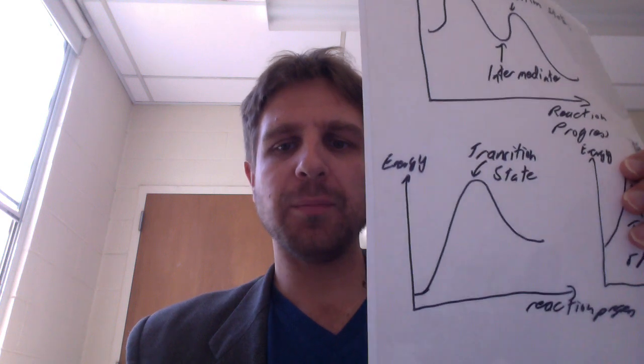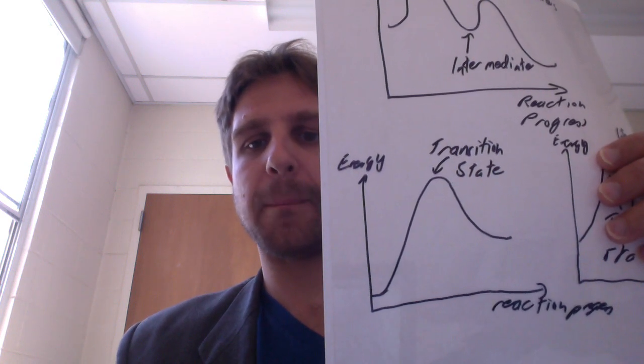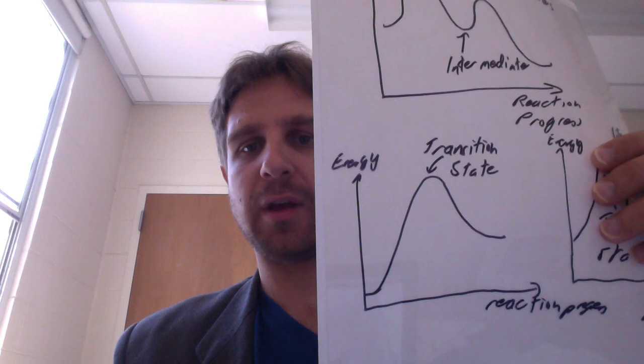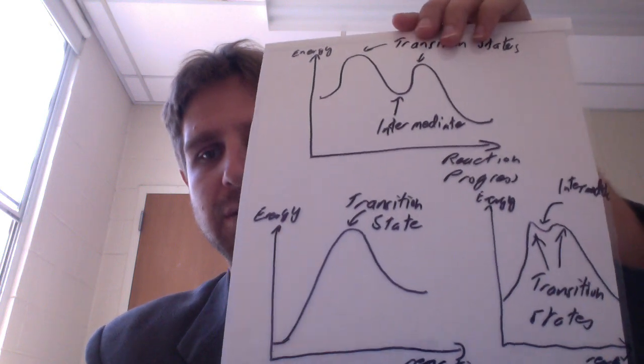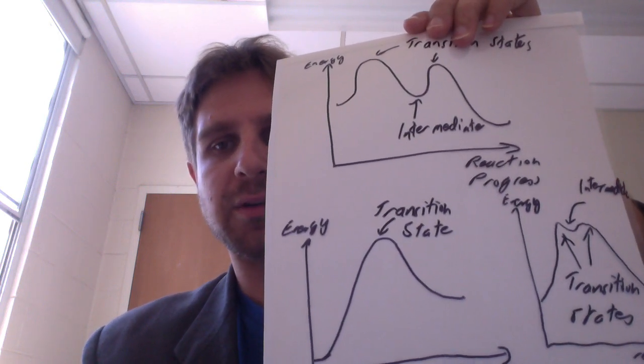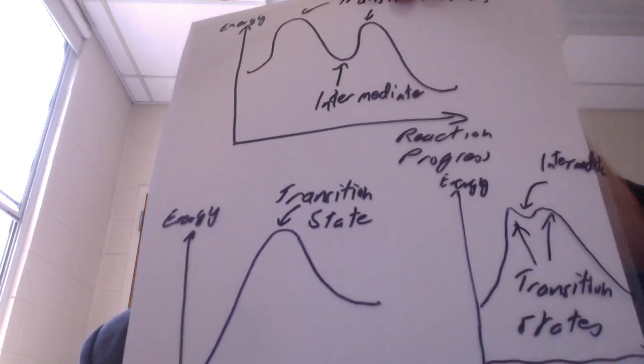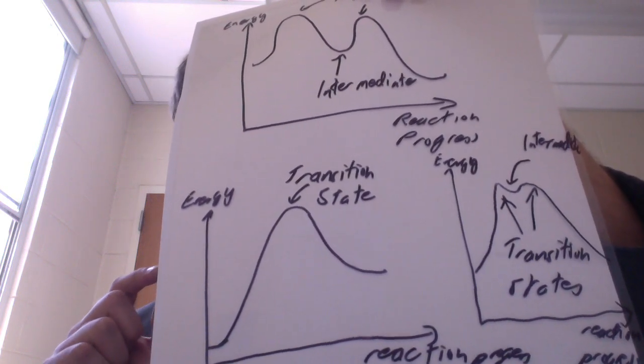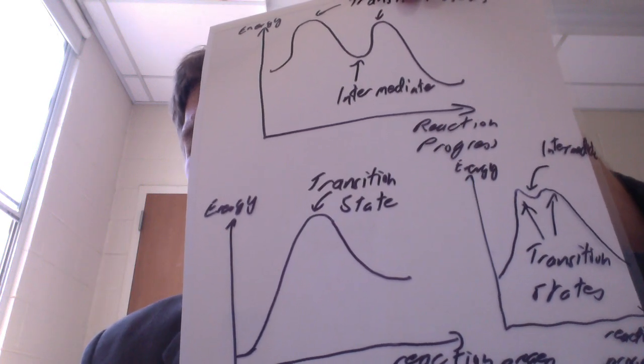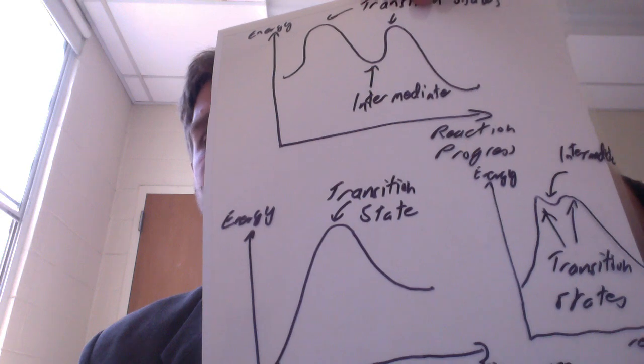Some other, perhaps more exotic cases: a simple case shown at the bottom left depicts a transformation that proceeds, as always, through a transition state, but involves only starting material and product — it's intermediate-free, but always has a transition state. Another extreme example shown at the bottom right has an intermediate with a very small energy difference between the transition state peaks and the intermediate, but there is still a local energy minimum, which is the intermediate.